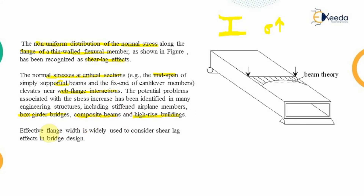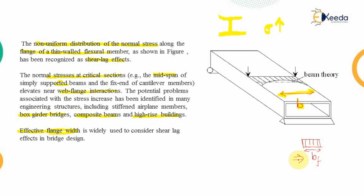In this case, we use the effective flange width instead of the actual width provided. The actual width B has a non-uniform distribution of stress, so we assume the stress distribution is uniform but over a shorter distance, denoted by BF — called the effective flange width. A similar criterion applies for the web section, though it is most prominent for flanges. This effective flange width is used in bridge design.